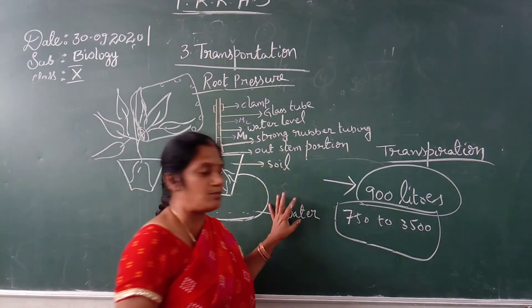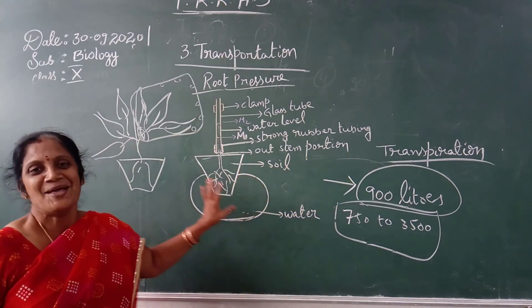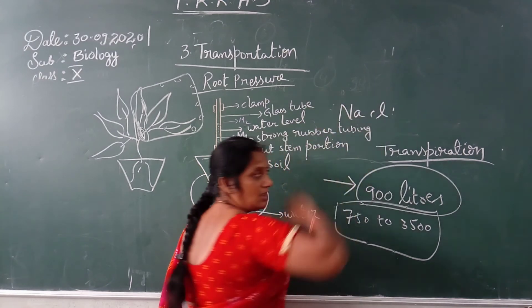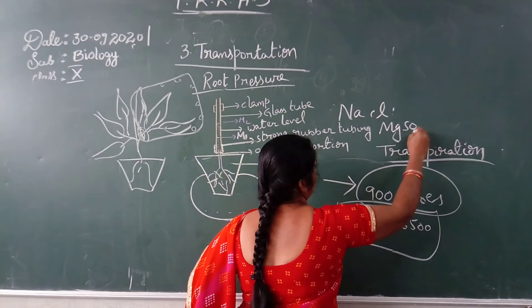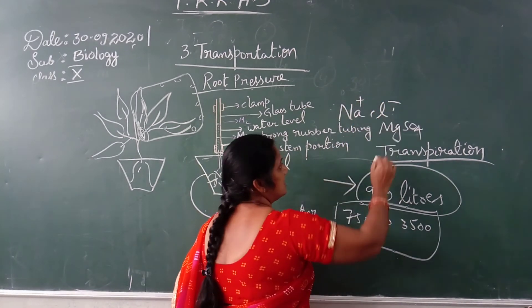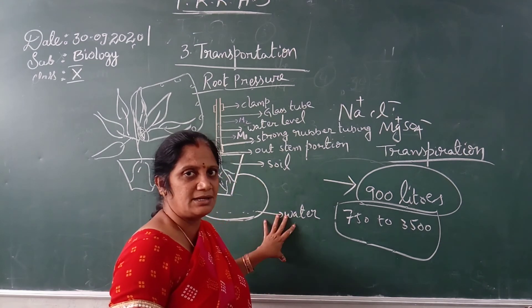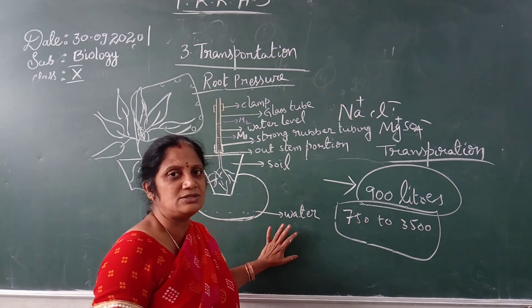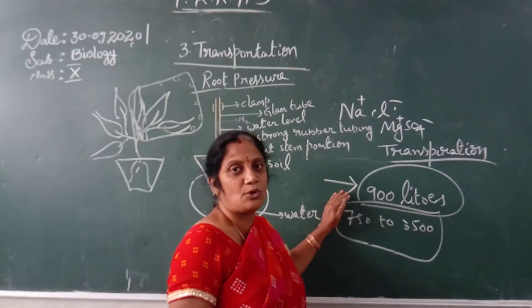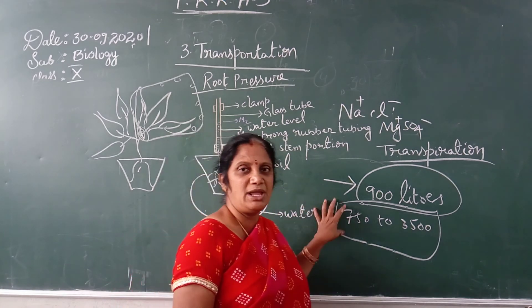Now let us discuss how minerals are transported. Minerals are micronutrients — for example, sodium chloride and magnesium sulphate. When these minerals dissolve in water, they divide into ions: sodium positive and chlorine minus, and magnesium positive and sulphate negative ions. These ions enter into the root cells from the soil through the processes of osmosis and diffusion, and then slowly move to wherever they are needed in the plant.